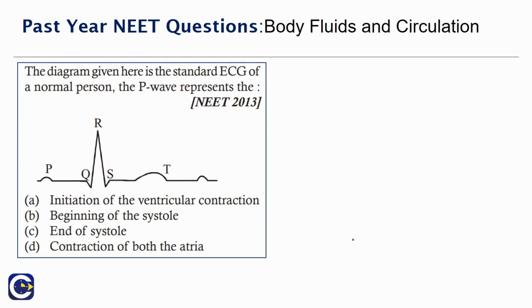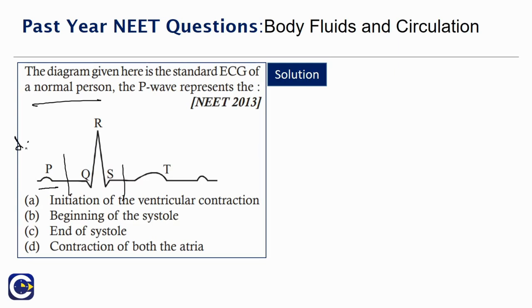The diagram given here is the standard ECG of a normal person. P wave represents: initiation of ventricular contraction, beginning of systole, end of systole, or the contraction of both the atria. We know that P represents the depolarization of atria, and QRS represents the depolarization of the ventricles.